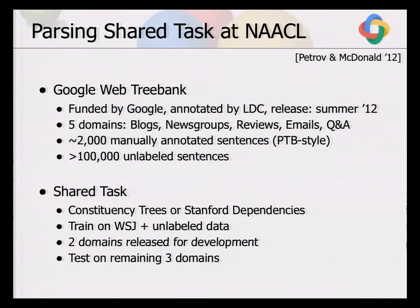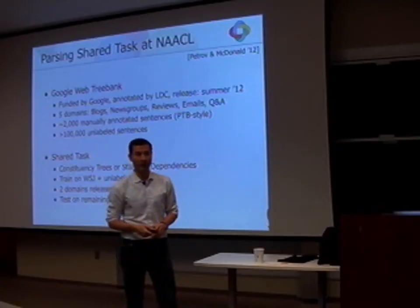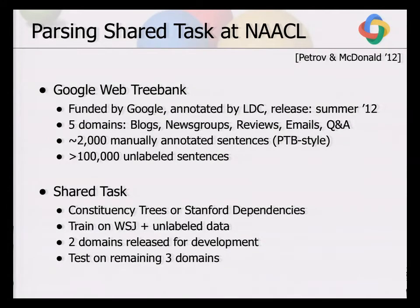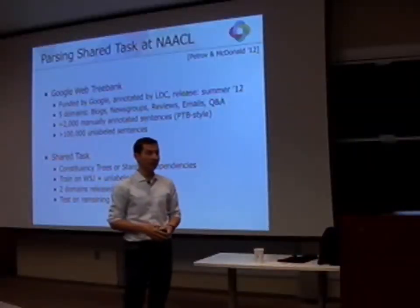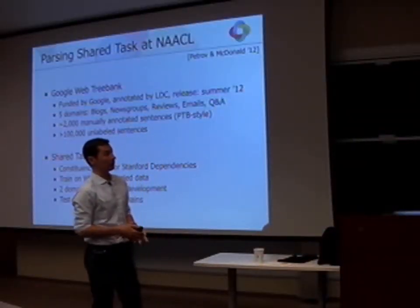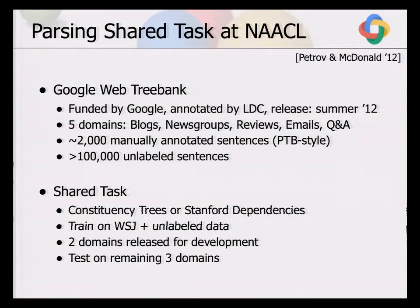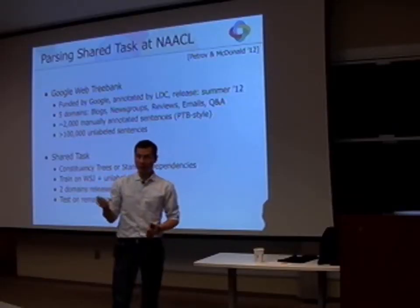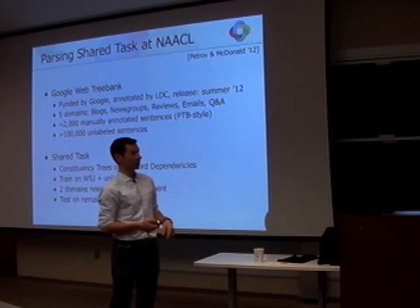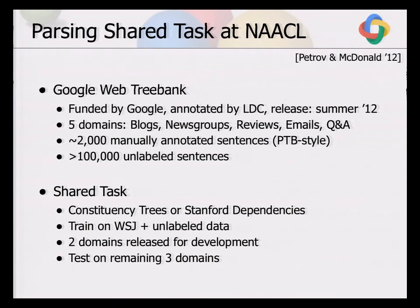As Google, we funded the LDC to create a web corpus and organized a shared task. There will be a Google Web Treebank containing five web domains: blogs, newsgroups, reviews, emails, and question-and-answer. It was annotated by the LDC — the same people who did the Penn Treebank — according to the same guidelines. For each domain, about 2,000 sentences were annotated, and there's a large pool of at least 100,000 unannotated sentences per domain from the same sample, which can be used for semi-supervised learning.